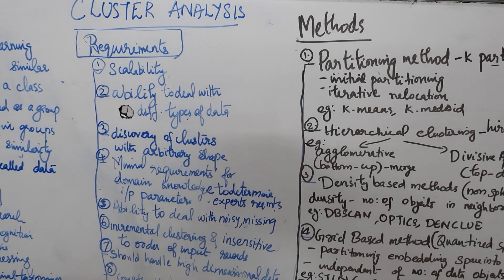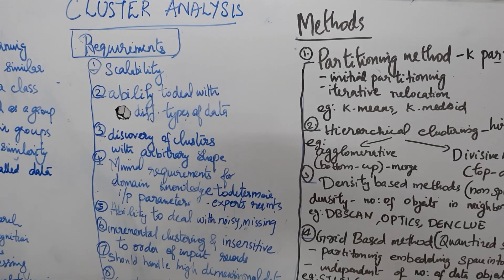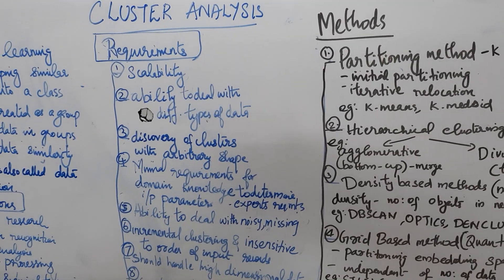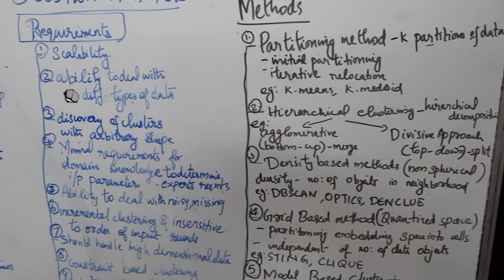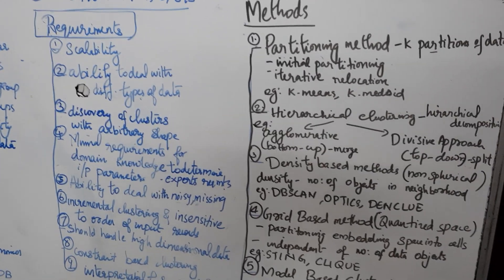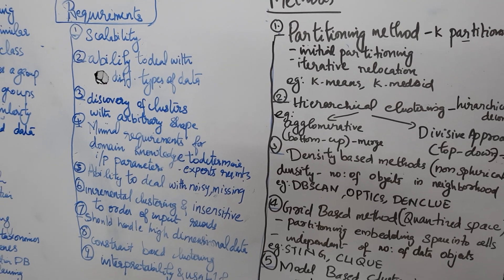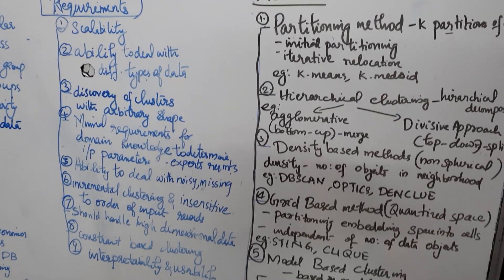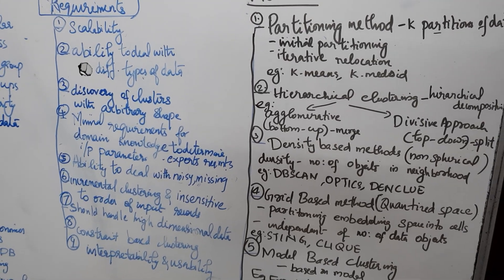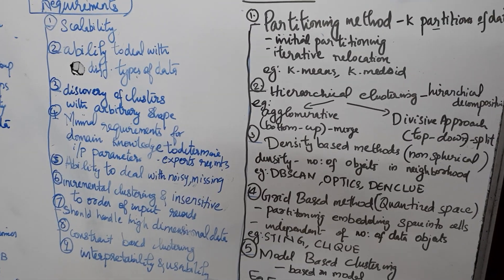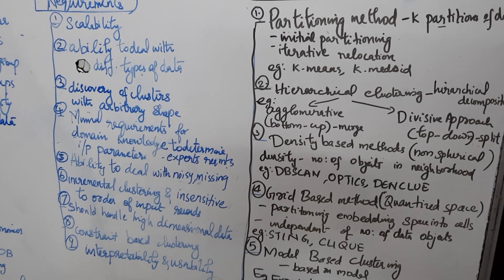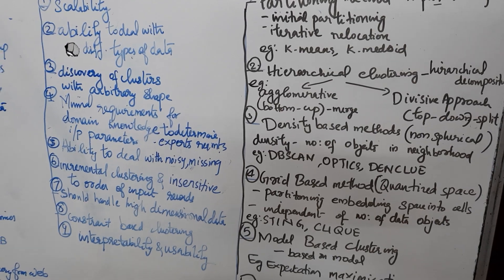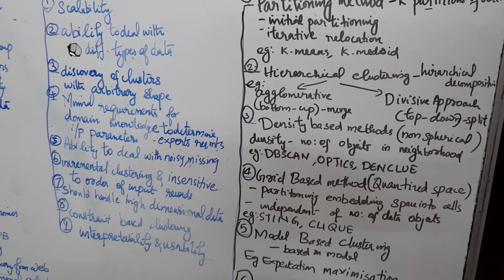The second requirement is the ability to deal with different types of data, including numerical data, binary data, categorical data, ordered data, etc. Then discovery of clusters with arbitrary shape — it is not compulsory that a cluster should be in spherical shape. Then minimal requirements for domain knowledge to determine input parameters; experts are needed to discover the parameters needed for clustering. High dimensional parameters may be a complex task. Then the ability to deal with noisy data, missing data, and erroneous data.